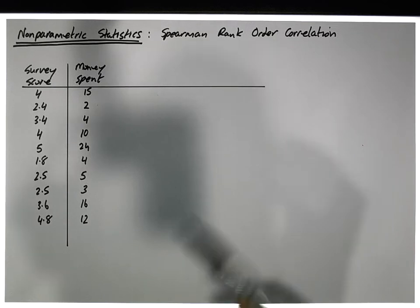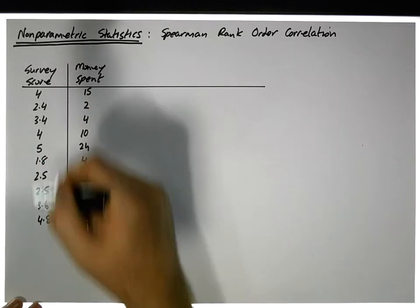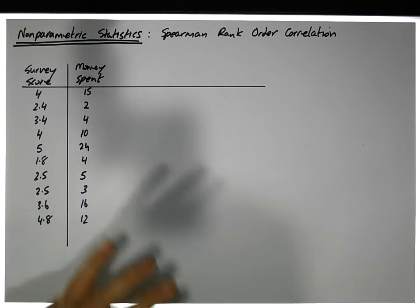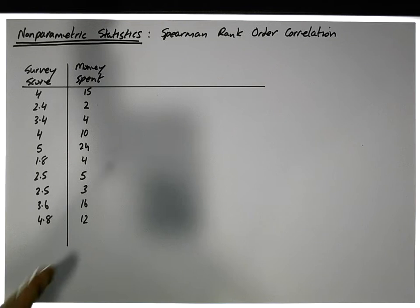In this particular correlation coefficient, we typically calculate this coefficient when our variables don't meet the criteria required with respect to the Pearson correlation coefficient, where there is an expectation that the variables are continuous, measured on an interval or ratio scale.